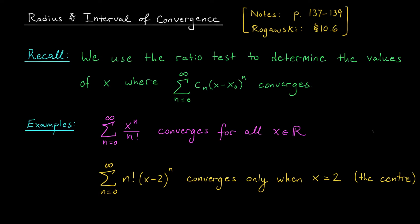Hi everyone, and welcome back. In our last lesson, we introduced the notion of a power series. This was very similar to a Taylor series — it's an infinite sum of powers of x minus x-naught with some coefficients c_n. Unlike a Taylor series, however, the coefficients don't need to come from a particular function f of x. We don't need to take the n-th derivative of a function and divide by n factorial to get these c_n's. They can be whatever you like. So a power series might feel a little bit more general than a Taylor series, but really these notions are more or less the same.